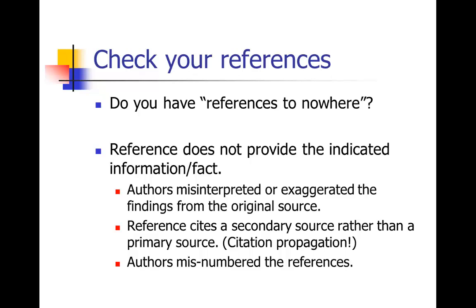There are a number of reasons this might happen. Authors will sometimes misinterpret or exaggerate findings from the original source. If you go back to the original reference, it turns out they were selective in the information they chose to cite. Or they're referencing a paper to back up a statement that is not exactly supported by the original reference — maybe supported in some roundabout way, but not directly. Another really common problem is that the reference cited is actually a secondary source and not the primary source. I call this citation propagation.